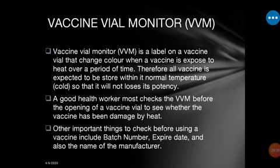Next is the vaccine vial monitor, or VVM. It is a kind of paper — just a paper placed in every vaccine vial — that monitors the temperature at which that vaccine is being stored. The paper is in the form of a circle and is ash-colored with a square inside.